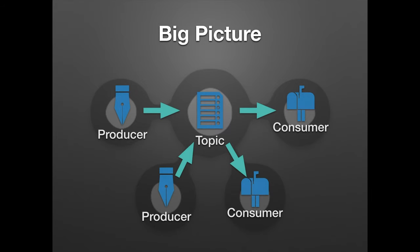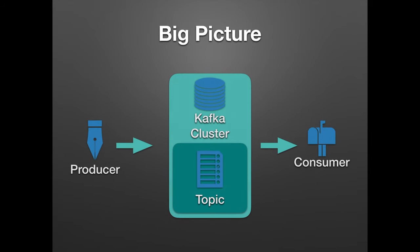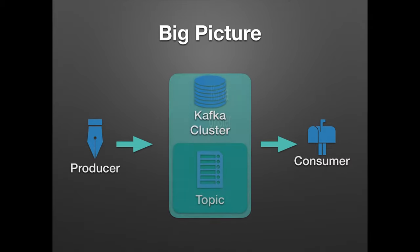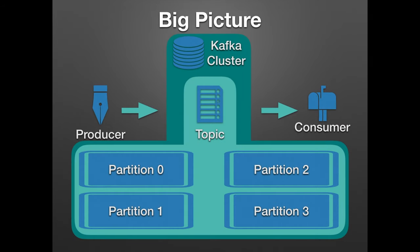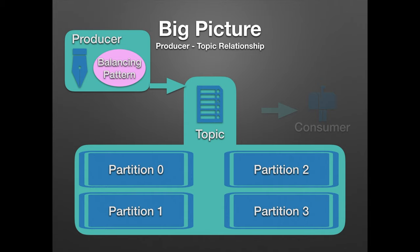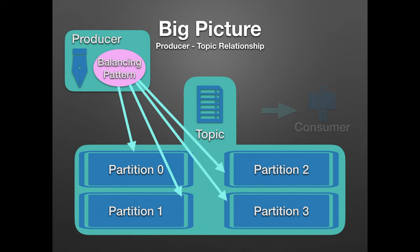The key concept of Kafka is that producers write to a topic and consumers read from that topic. Topics are stored within Kafka clusters, and these topics are composed of partitions distributed across the cluster. When producers write to partitions within a topic, they do so based on a predetermined balancing pattern. The pattern could be first-in-first-out, a load balancer to evenly distribute load across servers, or a proprietary algorithm that determines where to send data based on the programmer's needs. This pattern is used to determine how to divide data across the topic's partitions.